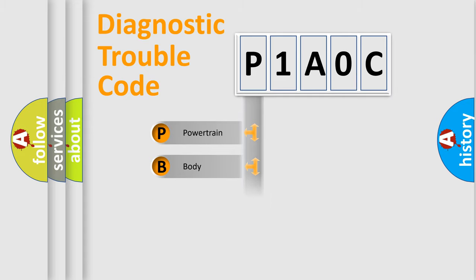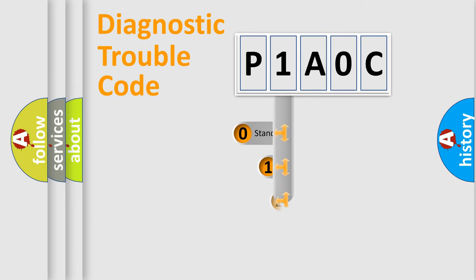Powertrain, Body, Chassis, Network. This distribution is defined in the first character code.